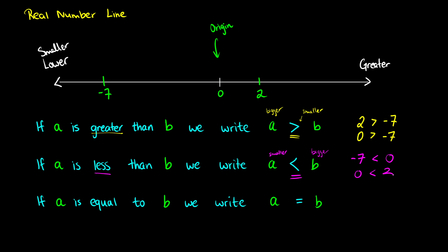If A is equal to B, we write A = B with the equal sign. With our real number line, this usually applies when we have a fraction and a number in decimal form. For example, 7 halves is exactly equal to 3.5 — and if you make a fraction complicated enough, that might not be obvious right away. It fits in with the less than and greater than symbols.